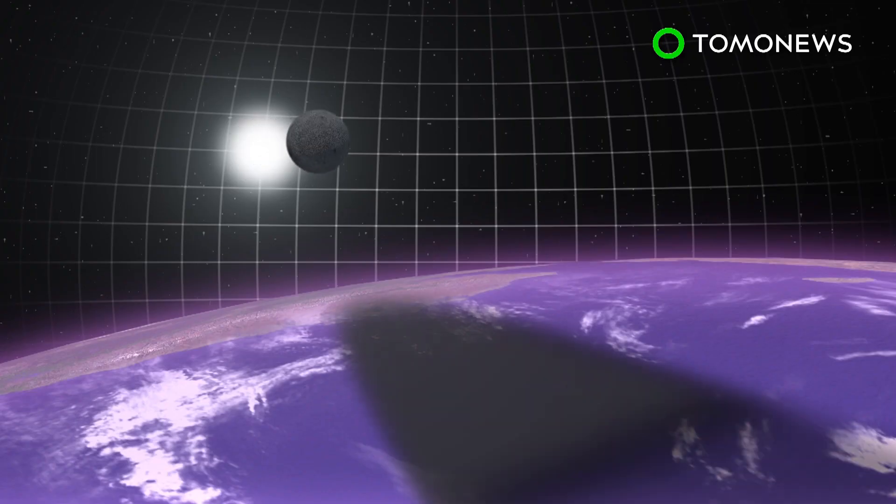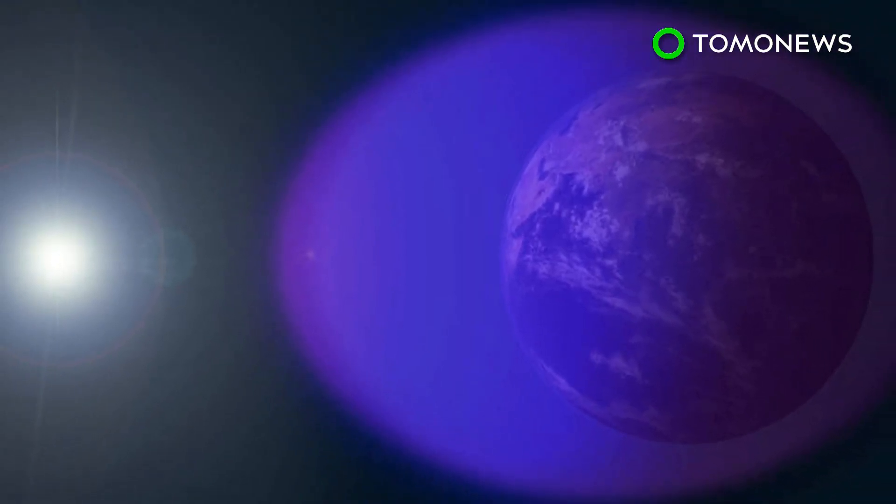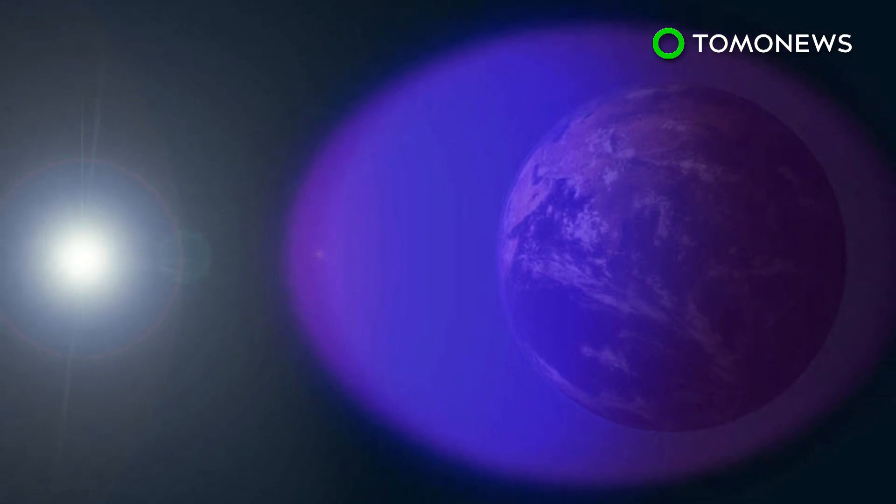The ionosphere will experience conditions similar to going from day to night and back again during the eclipse, and NASA will examine this short interval to better understand it. The space agency is funding 11 investigations into what takes place in the ionosphere during the eclipse.